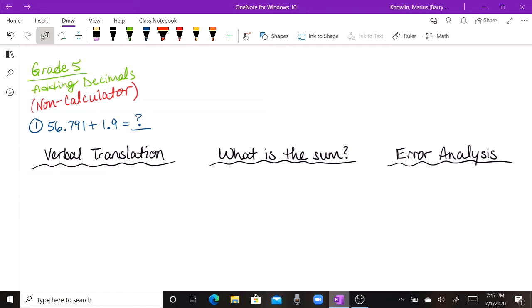You see I have it broken down into three main parts. A verbal translation, then we're going to actually jump into what the sum is. We're going to find the answer, and then we're also going to talk about error. We're going to have an error analysis discussion to discuss what errors or mistakes people might possibly make when doing this type of problem.